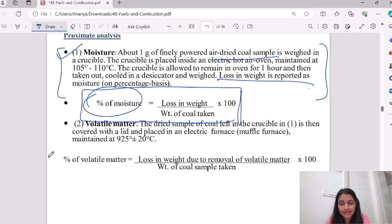Second thing is volatile matter. In volatile matter, there is dried coal left in the crucible after moisture. How do you determine volatile matter? After 925 plus minus 20 degree Celsius temperature, loss in weight upon weight of coal.